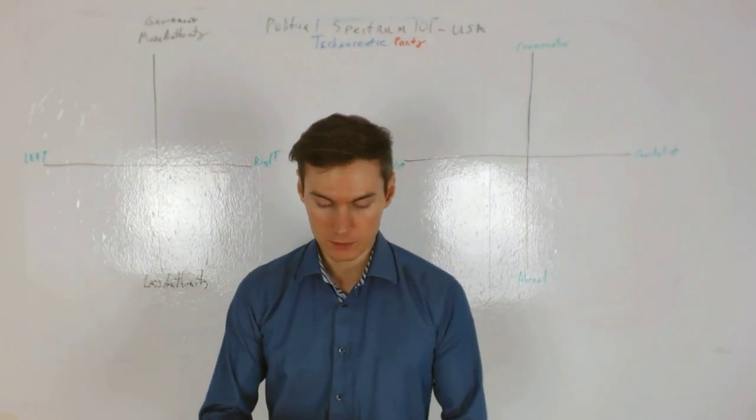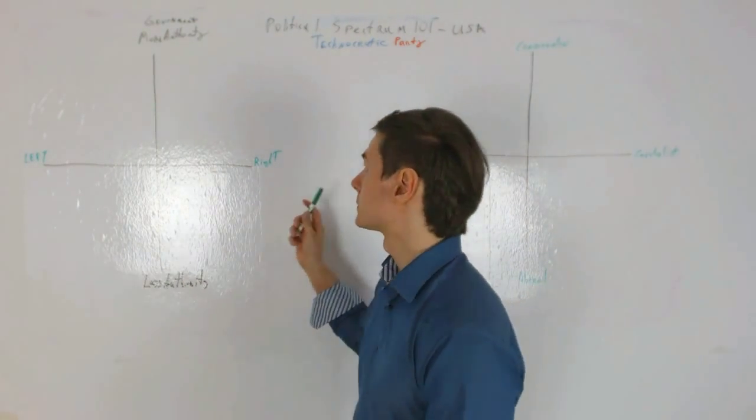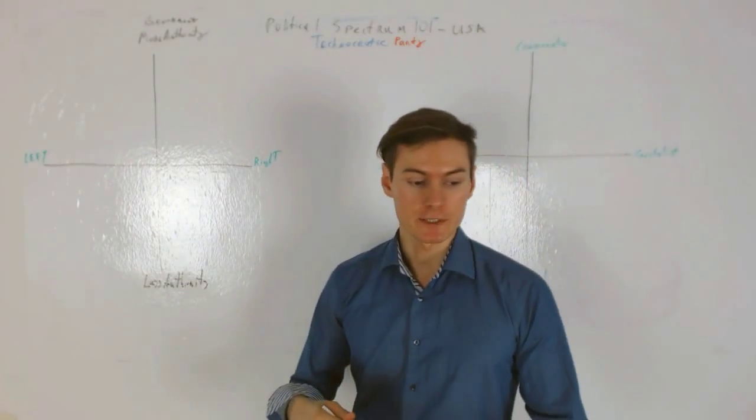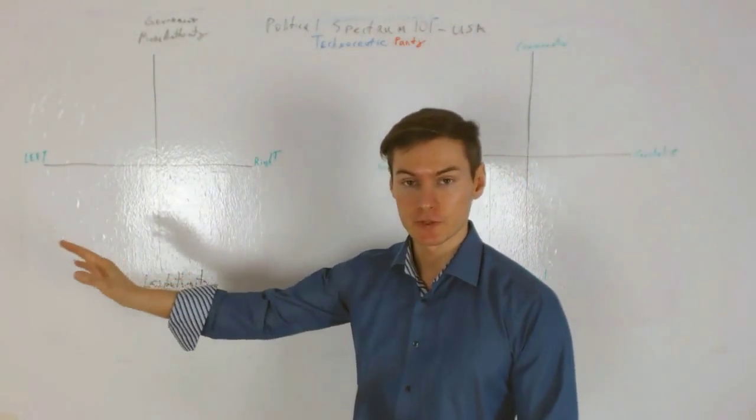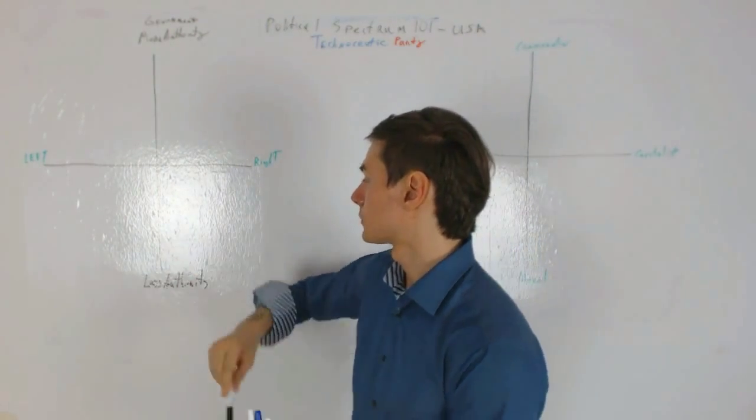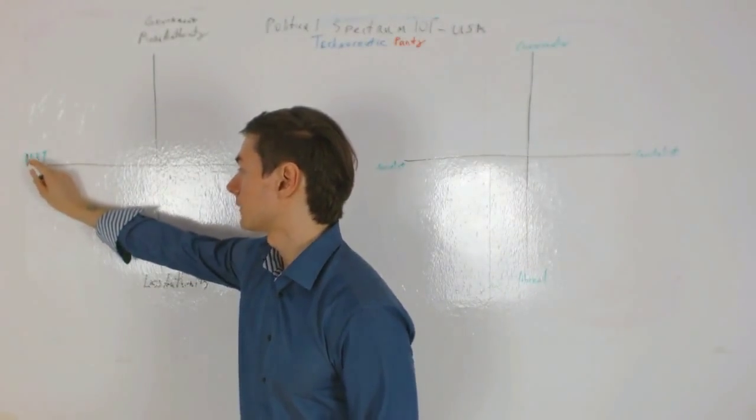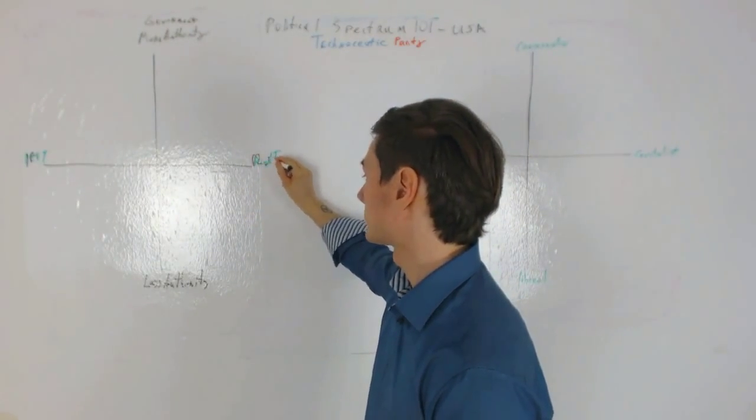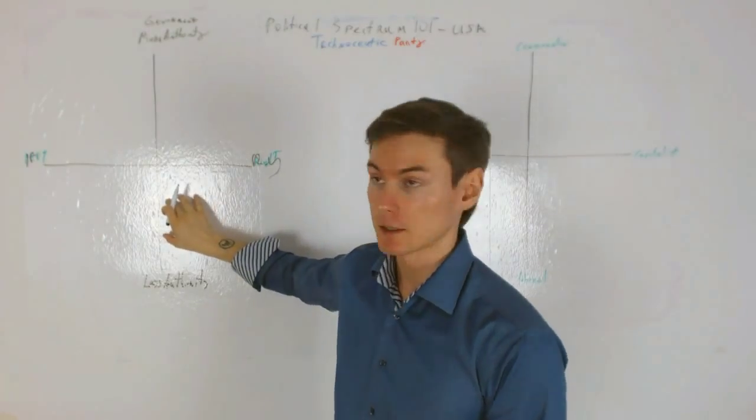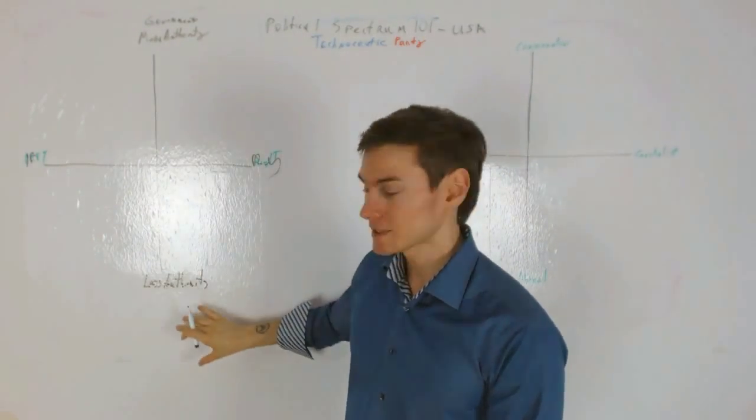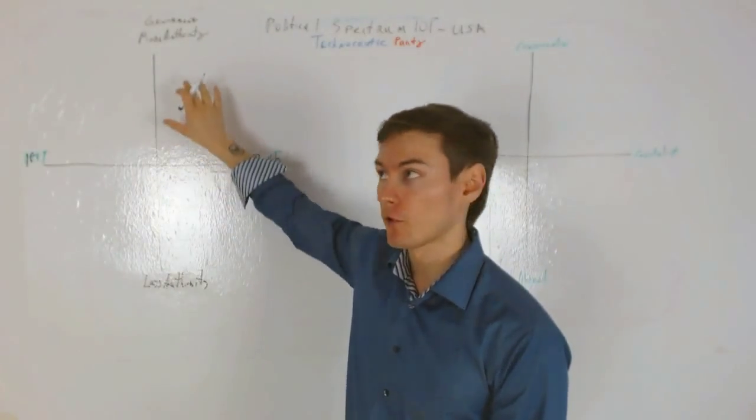So welcome back. And I'm going to continue describing the political spectrum 101. So traditional sense, as everybody knows, we have the left and the right. So let's look at this graph. So we have the left here, and we have the right over here. And the idea is that this y-axis is more government and less government, less authority, more authority.